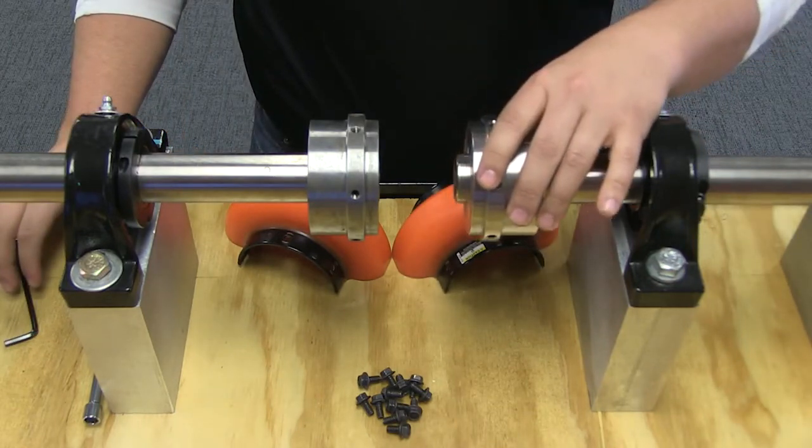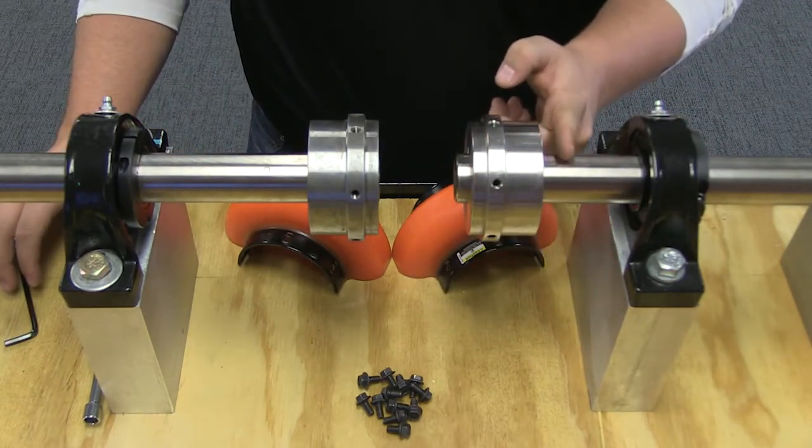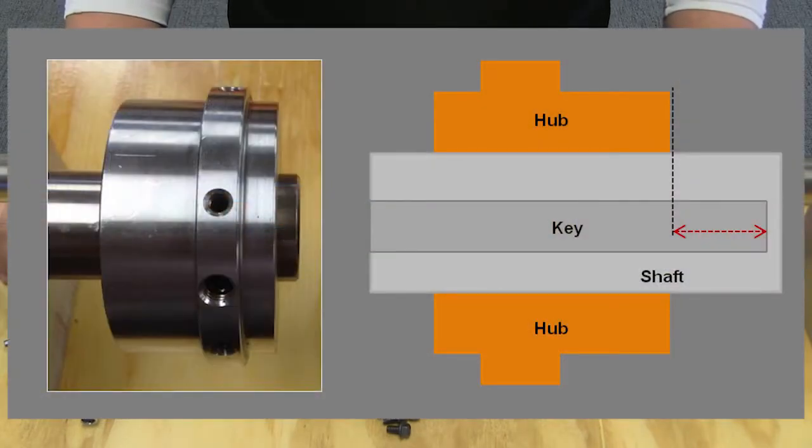You are able to slide the hub back onto the shaft, as long as there is sufficient keyway length available, as shown by the dotted red line in the graphics shown here.